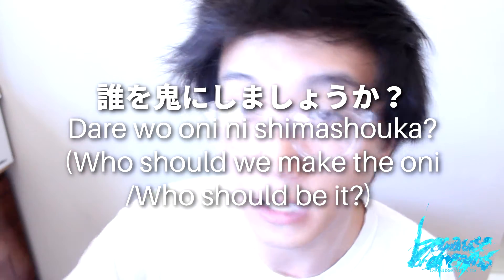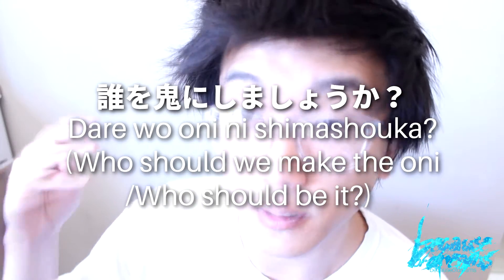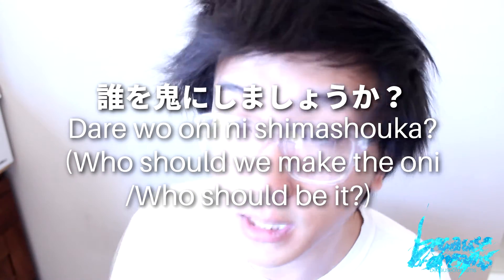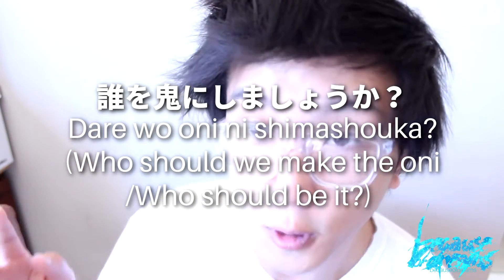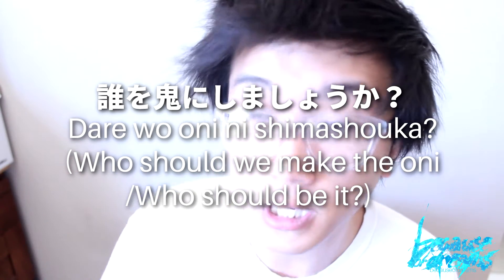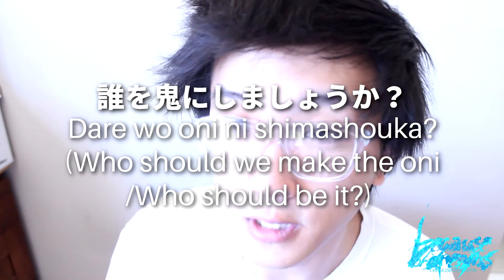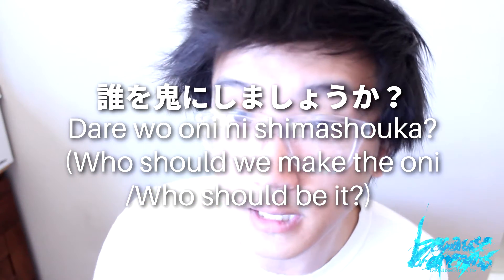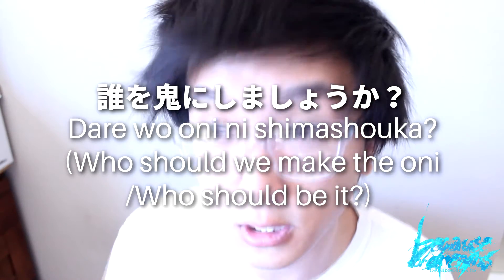In this context, oni just means the person who is 'it' in the game of tag. We have ni because that's the particle we use for nouns in this grammar construct. Then we have shimashou ka — the mashou form of suru followed by ka to make it a question. So 'who shall we make' — and since this is the grammar construct, it's 'who shall we make it.' Dare o oni ni shimashou ka — who should we make the oni.